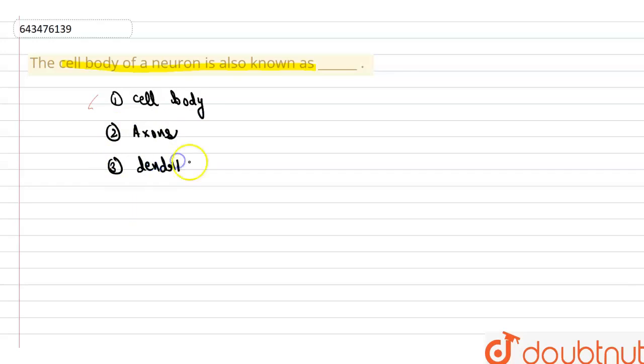Okay, so these are the main parts of the neuron. The cell body is also known as soma. Cell body is also known as soma, which is the neuron's core, or we can say that the cell body is the neuron's core.